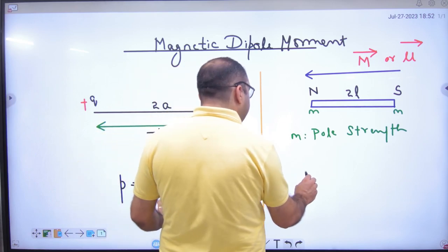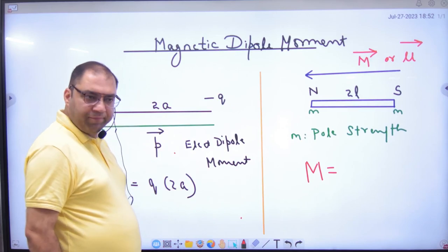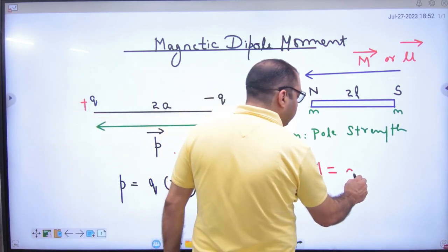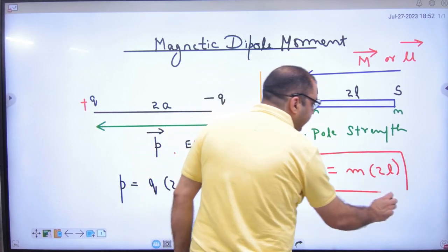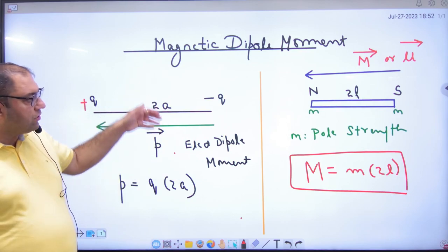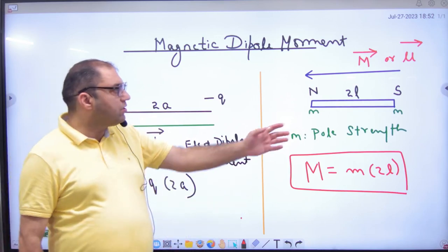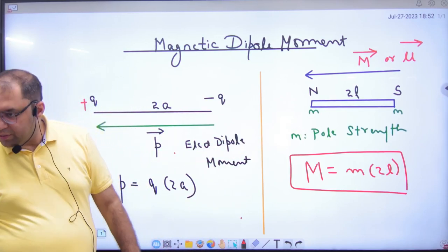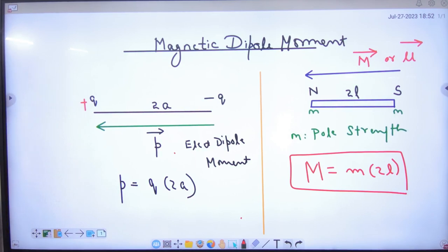So, what was the magnitude of P? Q into 2A. What would be P? What would be M? Small M and length 2L. What would be M? Magnetic dipole moment. The same thing is happening. Like in electrostatics, electric dipole moment and magnetic field magnetic dipole moment and direction is south to north. So, the first concept of the introduction of magnetic dipole moment is exactly this.